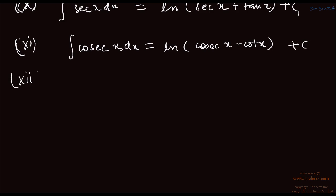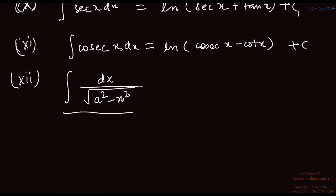These were all the trigonometric function formulas. Now we will deal with algebraic functions. The first of them involves the root of a² minus x². Whenever you are dealing with this type of expression — a² minus x² under a root — you use substitution: put x as a sin θ.